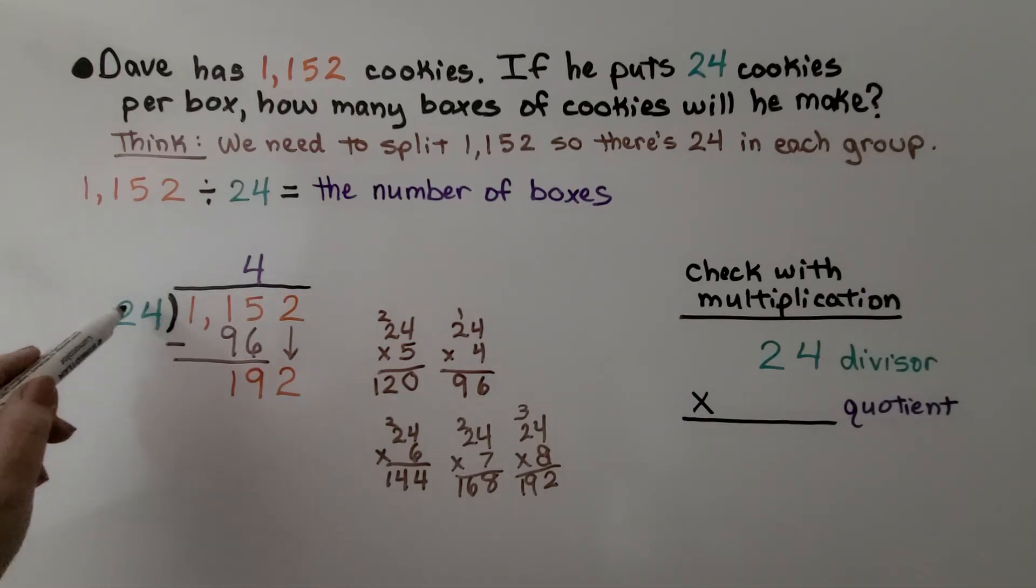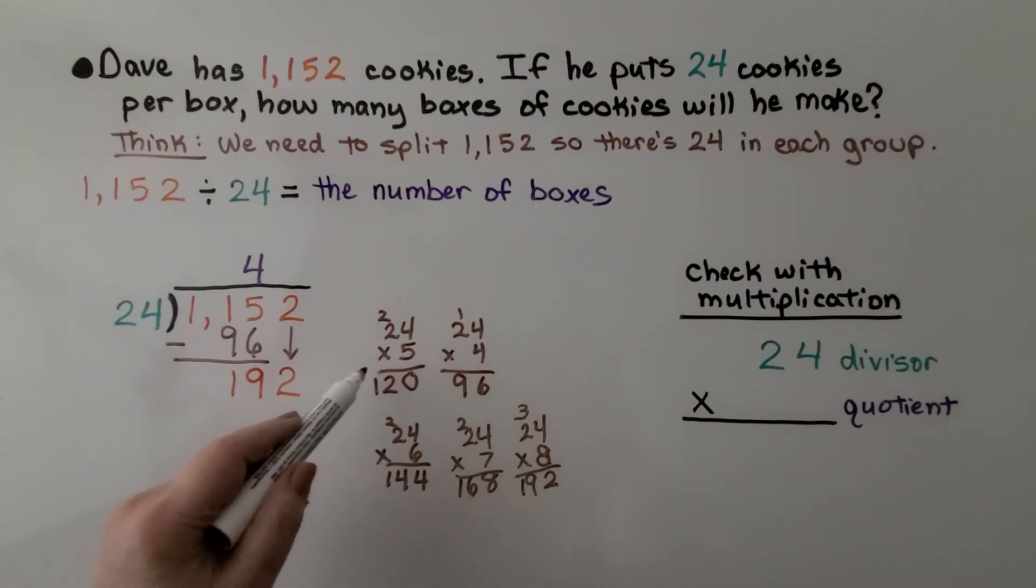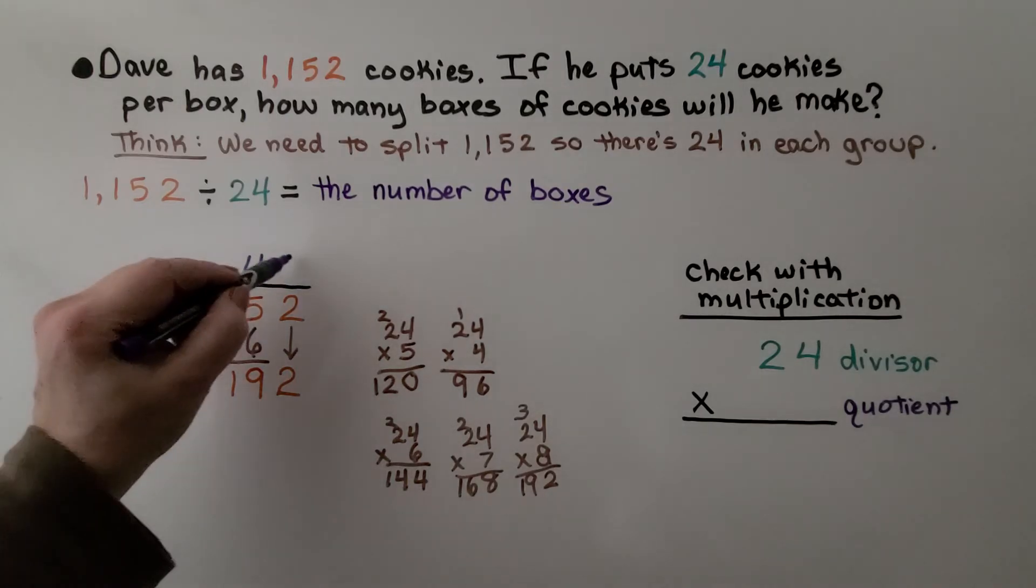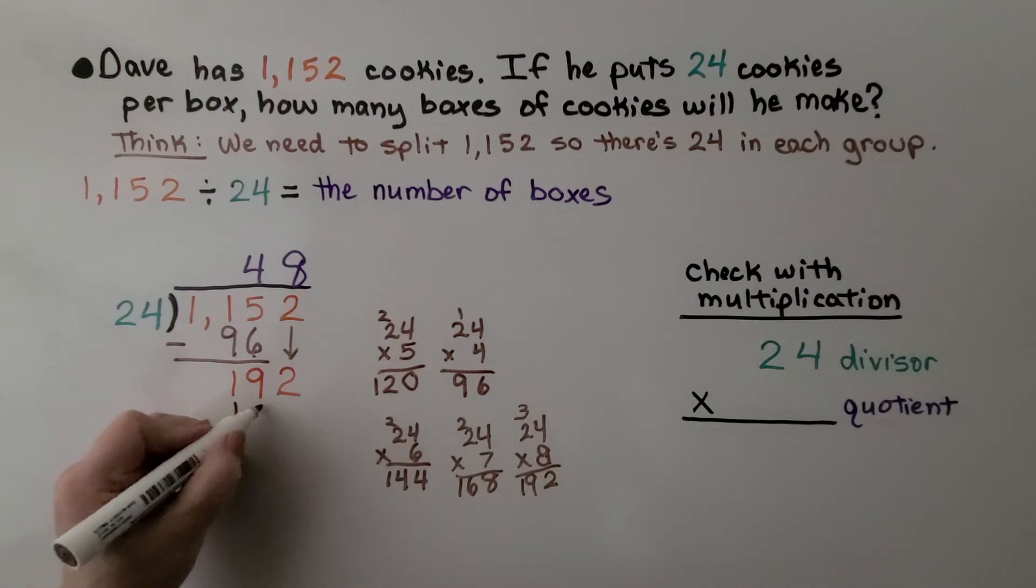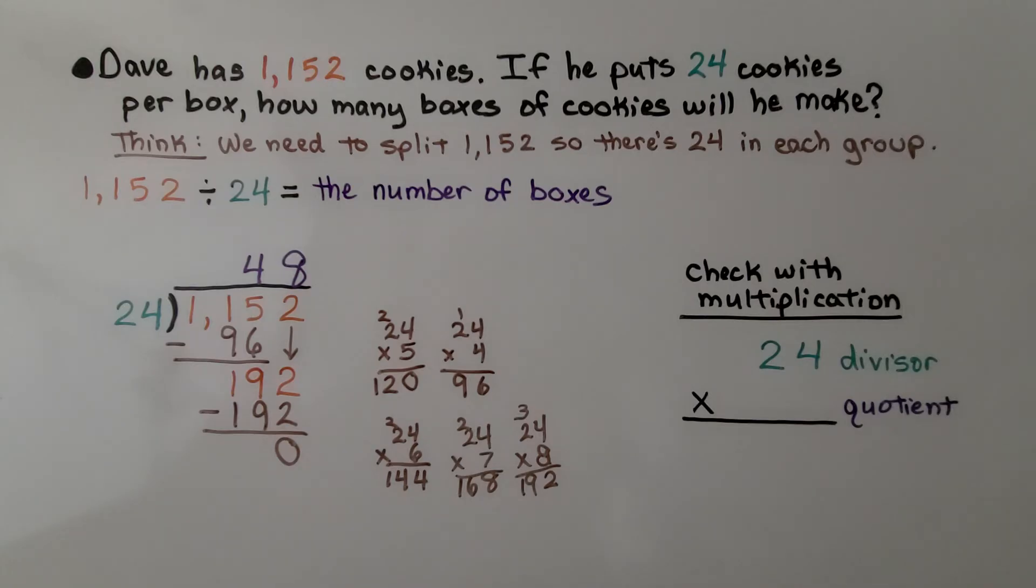Now we have to see how many times 24 can fit into 192. I did a little multiplication on the side. We know 5 is not enough, that's only 120. 6 is 144, 7 was 168, and 24 times 8 is 192. So we know that we can put an 8 here. 24 times 8 is 192. We subtract, get a zero remainder. We know that Dave can make 48 boxes of cookies.